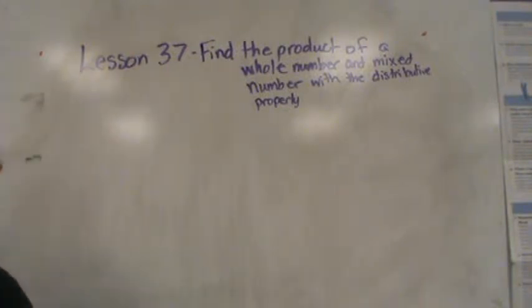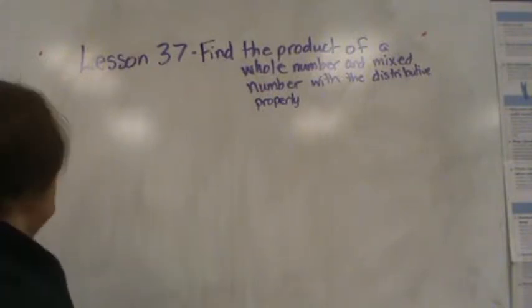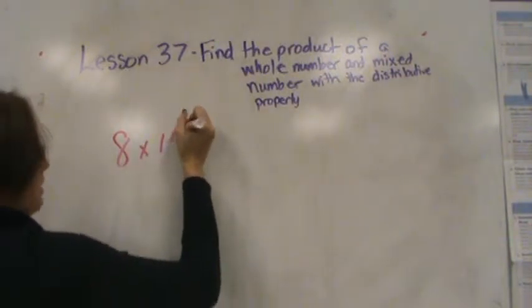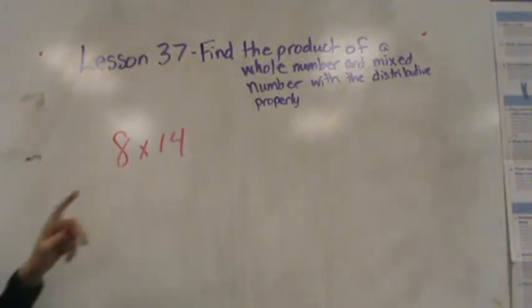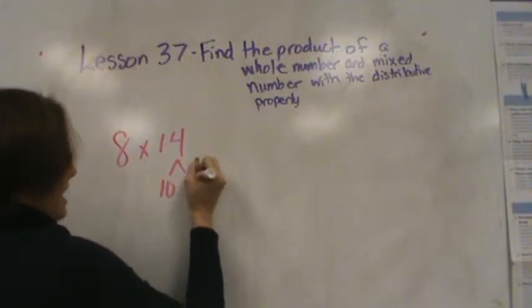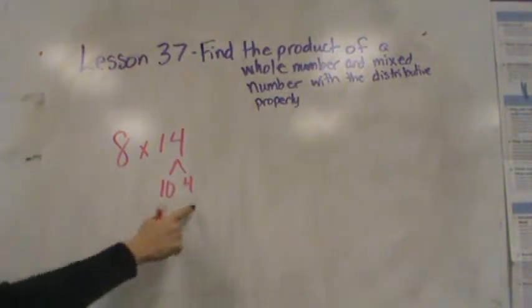Before we do that, let's do a quick review of the distributive property with numbers that are bigger than 1. So let's do 8 times 14. Remember, I could break up 14 into two numbers. I could break it up into 10 and 4. 10 plus 4 is 14.